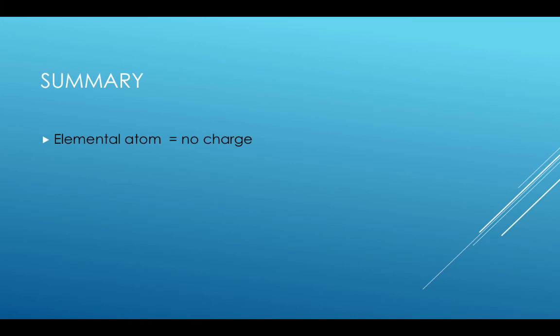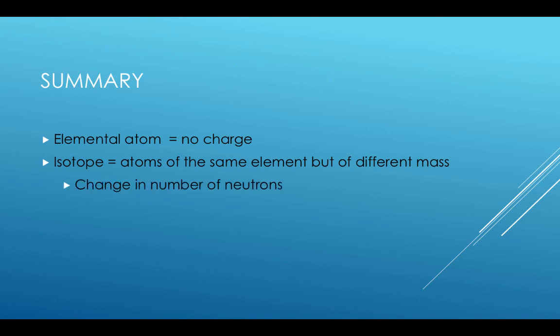In summary, elemental atoms have no charge. They have the same number of electrons as protons. Isotopes are atoms of the same element but with different masses, due to a variation in the number of neutrons. Ions are atoms with a net charge. This is due to a gain or loss of electrons.